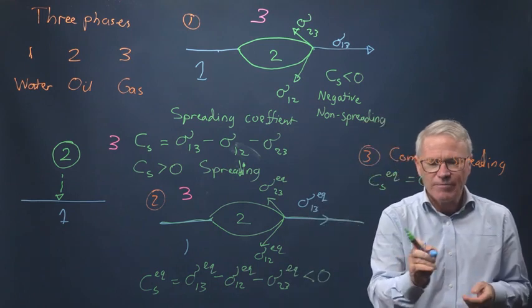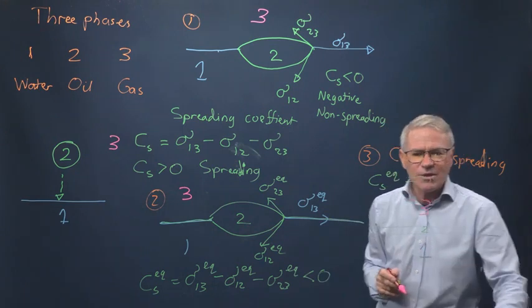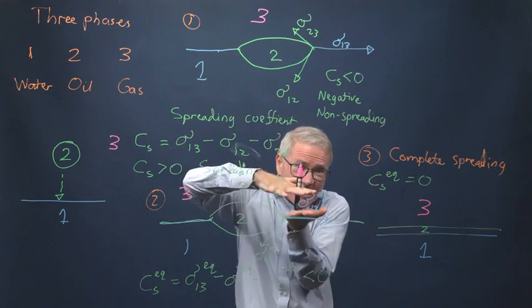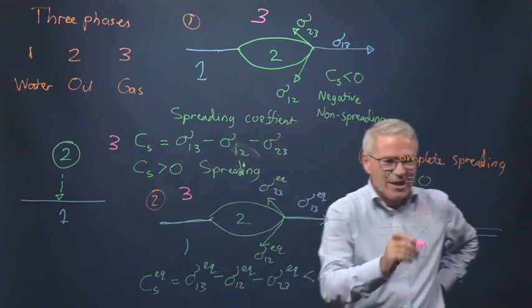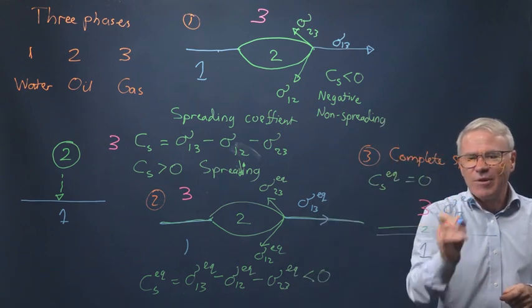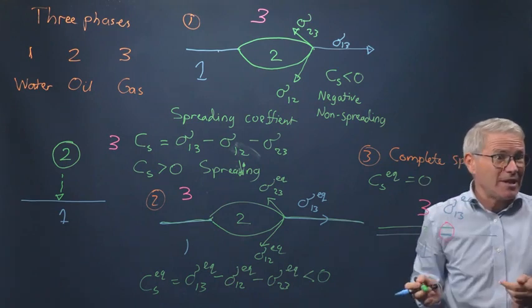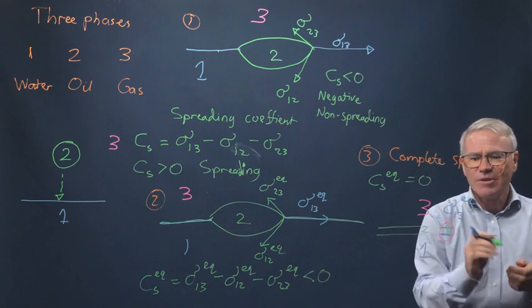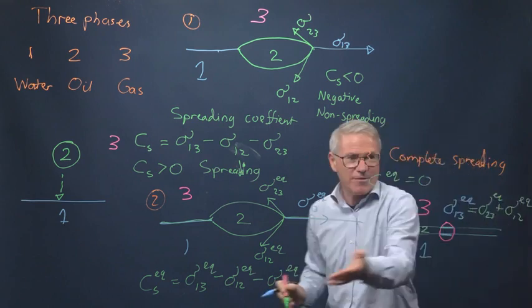The reason why this gives a zero equilibrium spreading coefficient is because any oil basically resides here as a film or layer between the other two phases and gets thicker and thicker. At some stage you have a layer that's outside the range of intermolecular forces. So sigma-1-3 equivalent is basically this interface plus this interface — the energy per unit area is just the energy per unit area of a 2-3 interface and a 1-2 interface. By definition, this equals sigma-2-3 plus sigma-1-2 in equilibrium, so the spreading coefficient is by definition zero.